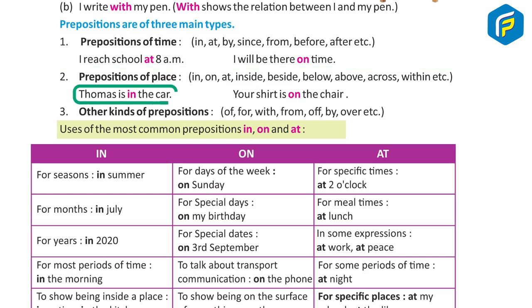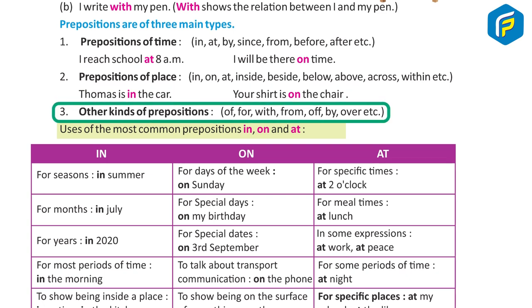Examples: Thomas is in the car. Your shirt is on the chair. Type 3: Other kinds of prepositions — of, for, with, from, by, over, etc.